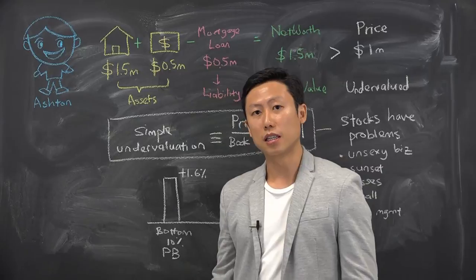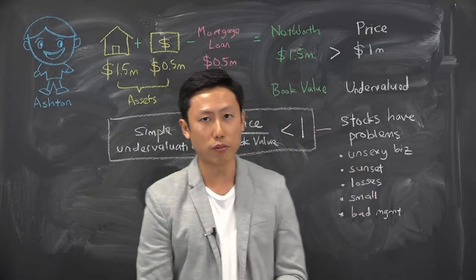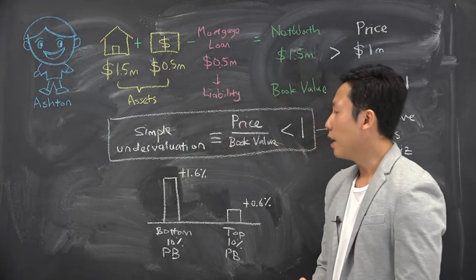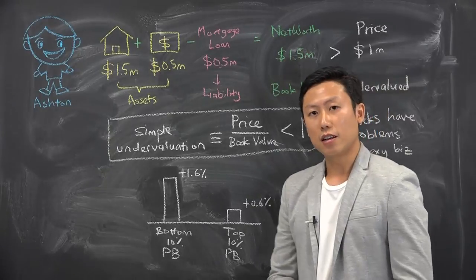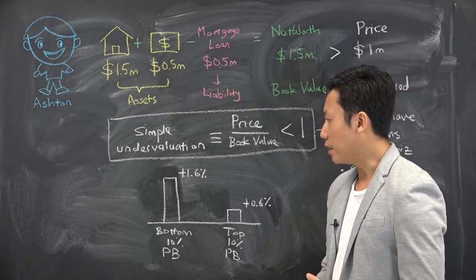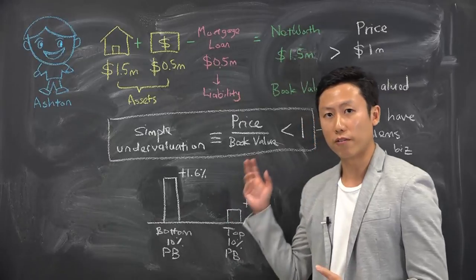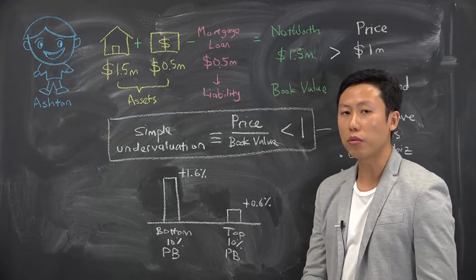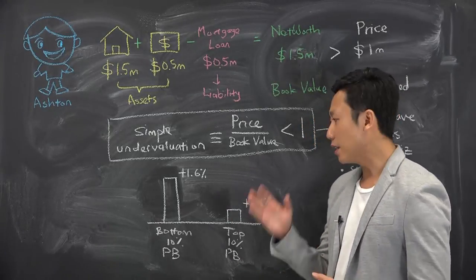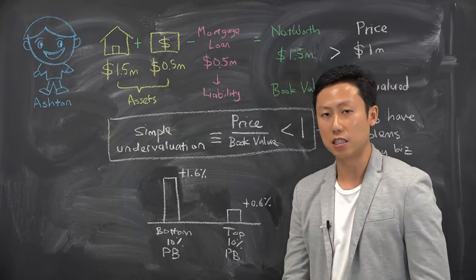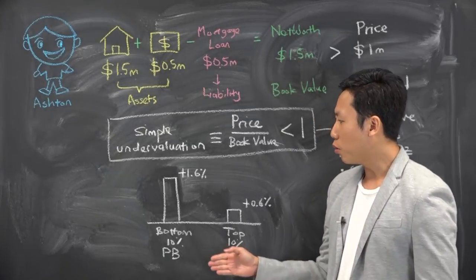There are tons of problems that associate with undervalued stocks and generally investors tend to shun them because they don't like the problems. But that's it. Researchers have done a study that if you buy very cheap stocks which are very low price to book stocks, your returns are actually higher regardless of all the problems that persist in these companies.